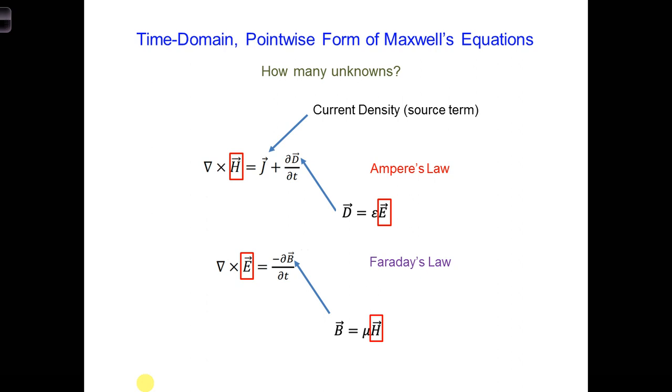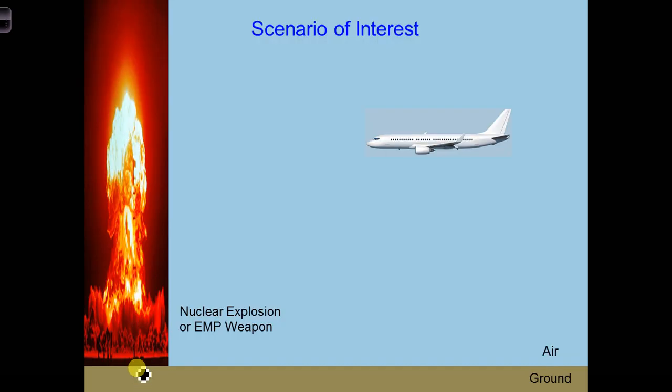Next, so we're going to be solving for E and H. Next, we need to figure out what kind of electromagnetic propagation we're interested in for our scenario of interest. For example, what kind of electromagnetic waves from a nuclear explosion can reach an airplane? It is helpful to know both the spatial geometry of the wave, like what shape does the wave have when it reaches the airplane, and also the frequency content of the wave.